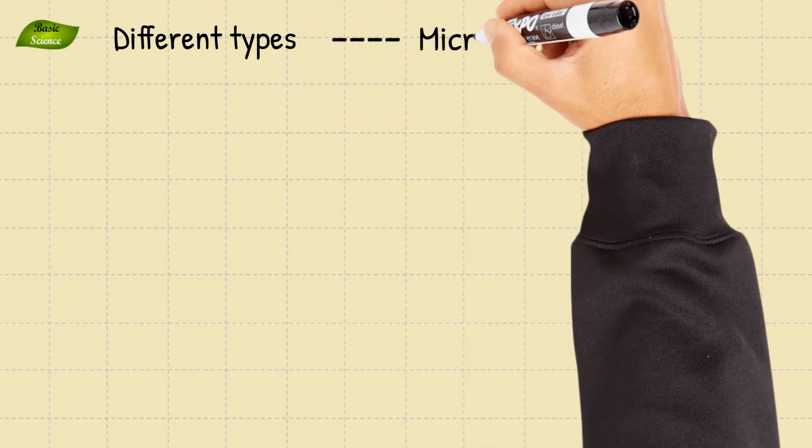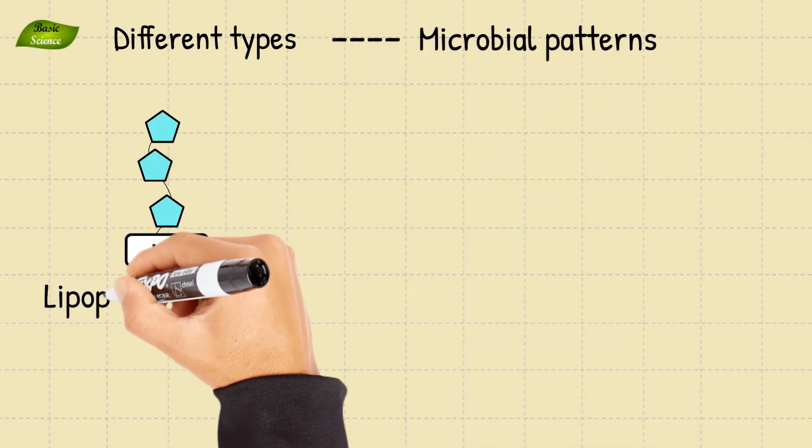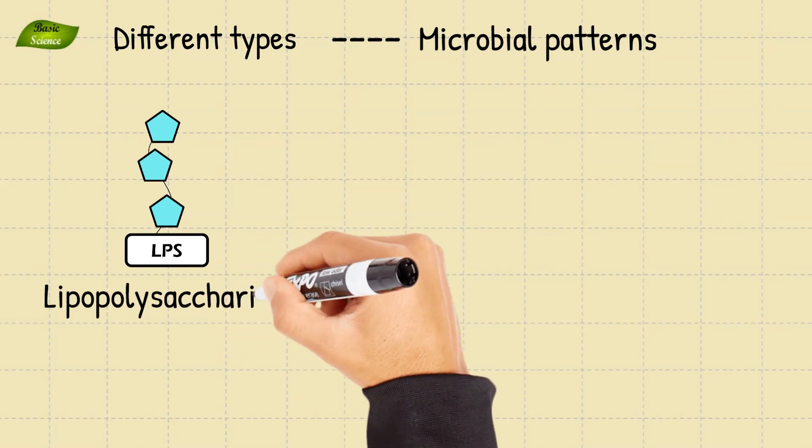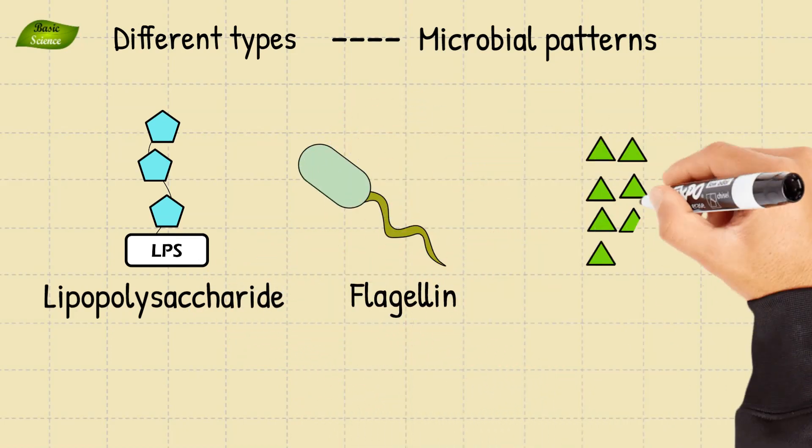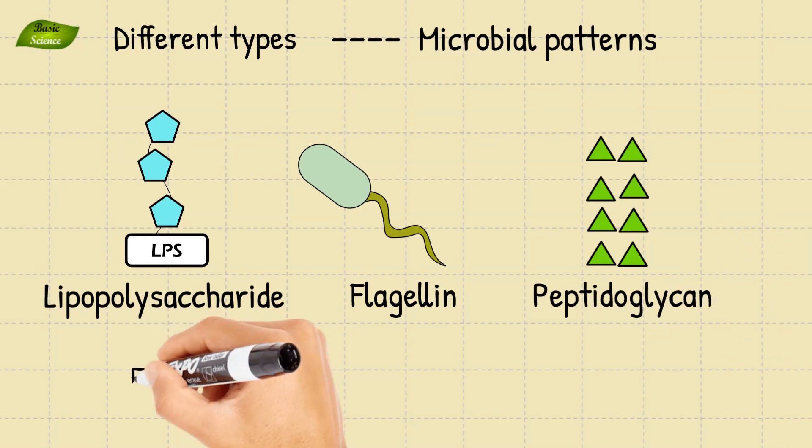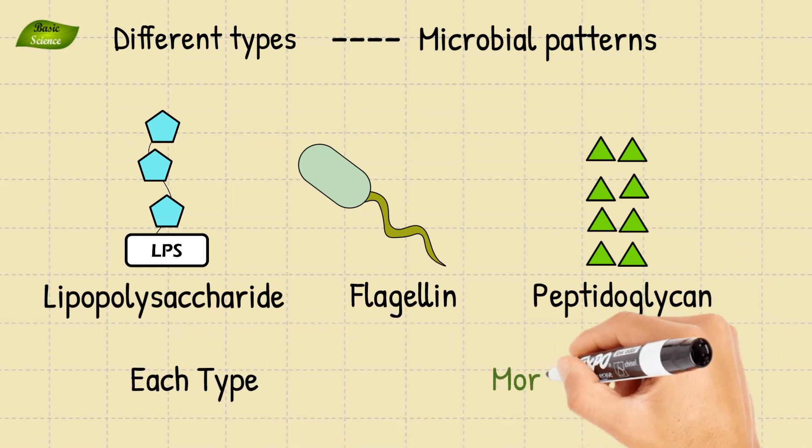There are several types of microbial patterns including lipopolysaccharide (also known as LPS), flagellin, and peptidoglycan. Let's explore each type in more detail.